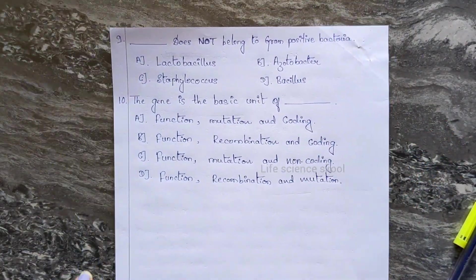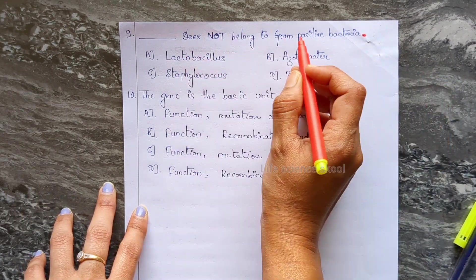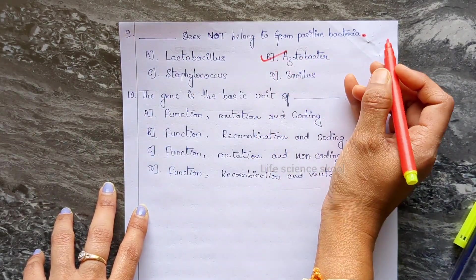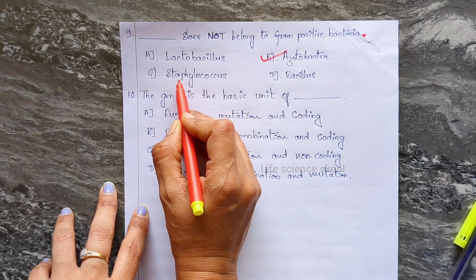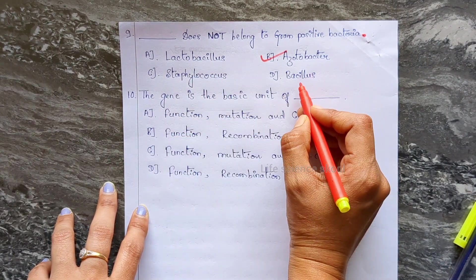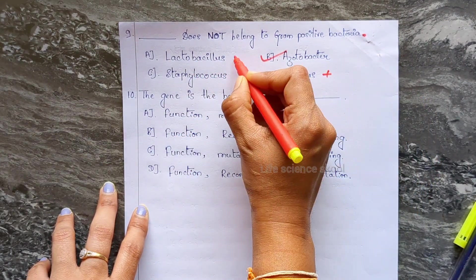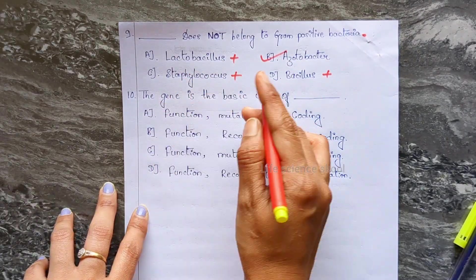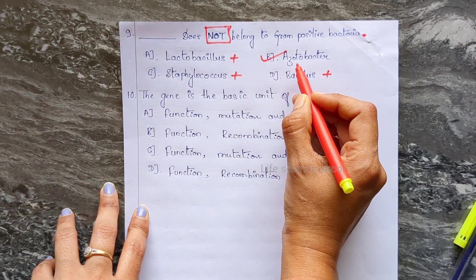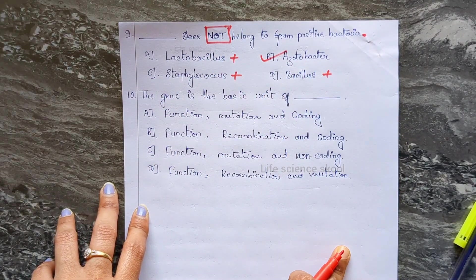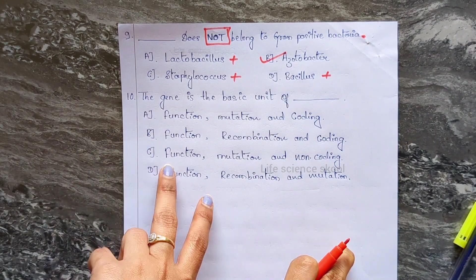Next question: which doesn't belong to gram-positive bacteria? Lactobacillus, Staphylococcus, and Bacillus are gram-positive bacteria. Agrobacterium is not a gram-positive bacterium — it is gram-negative. So Agrobacterium is the correct answer for which does NOT belong.